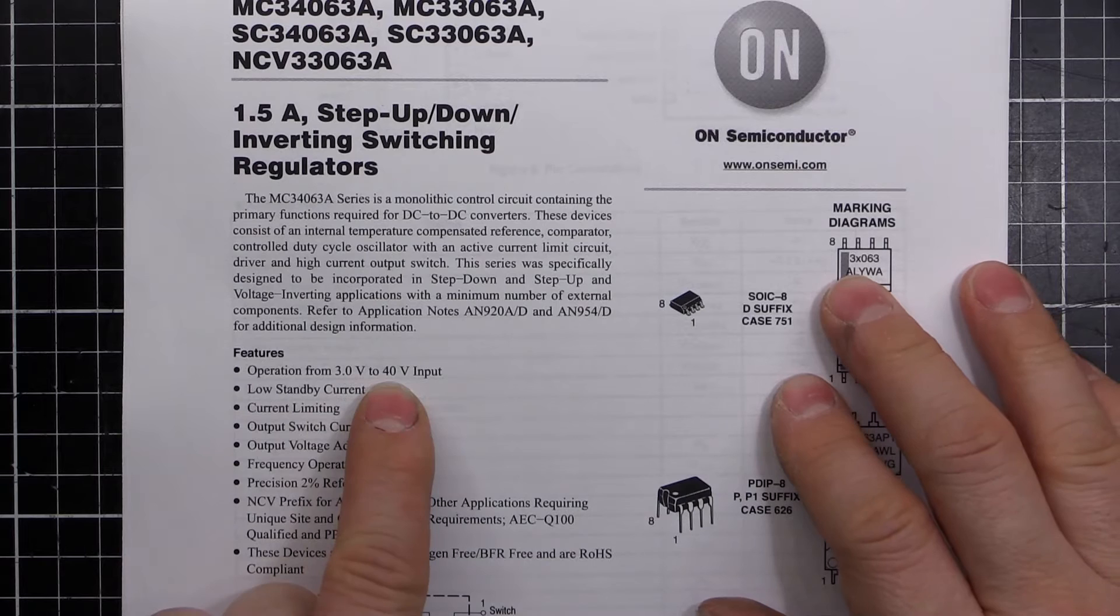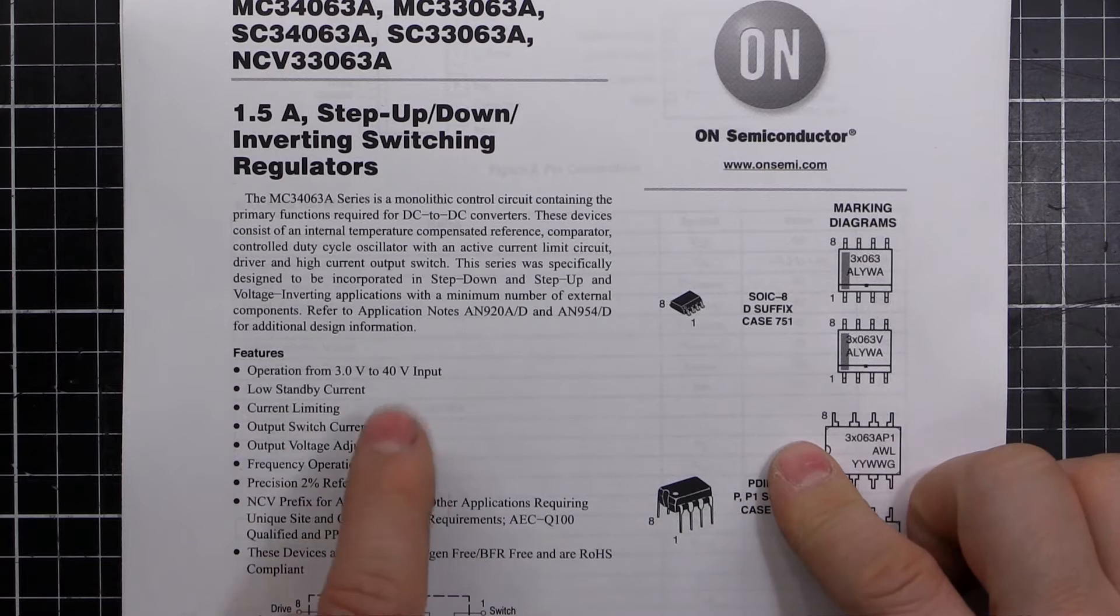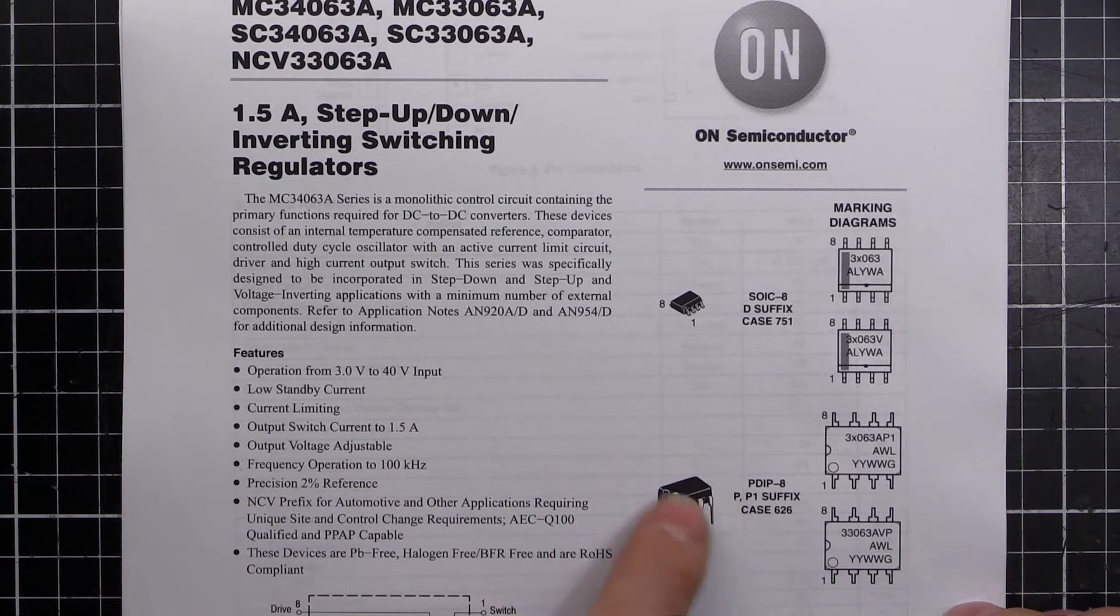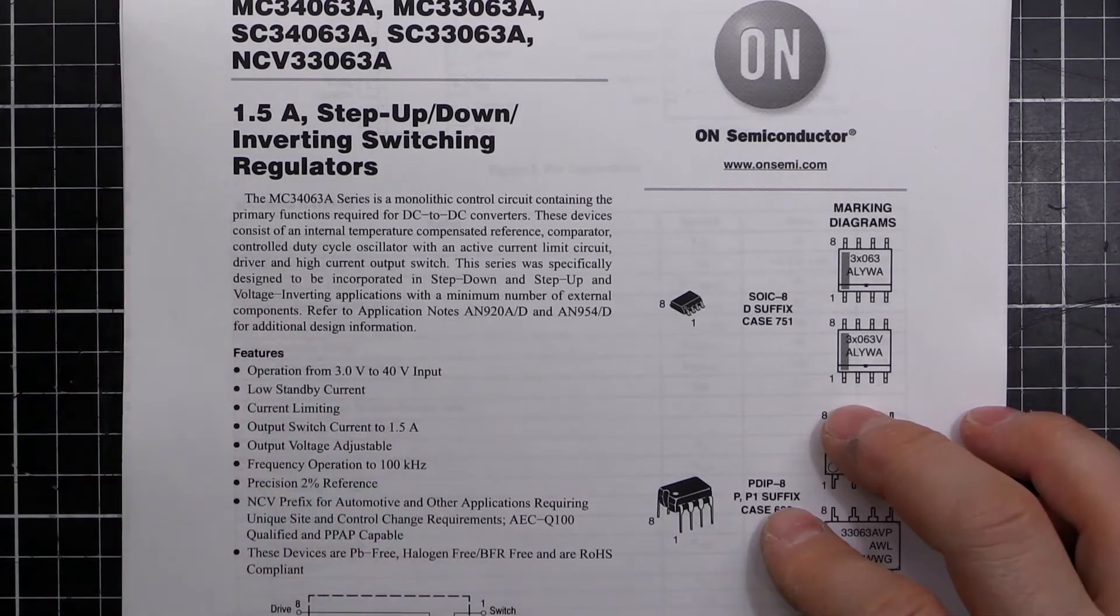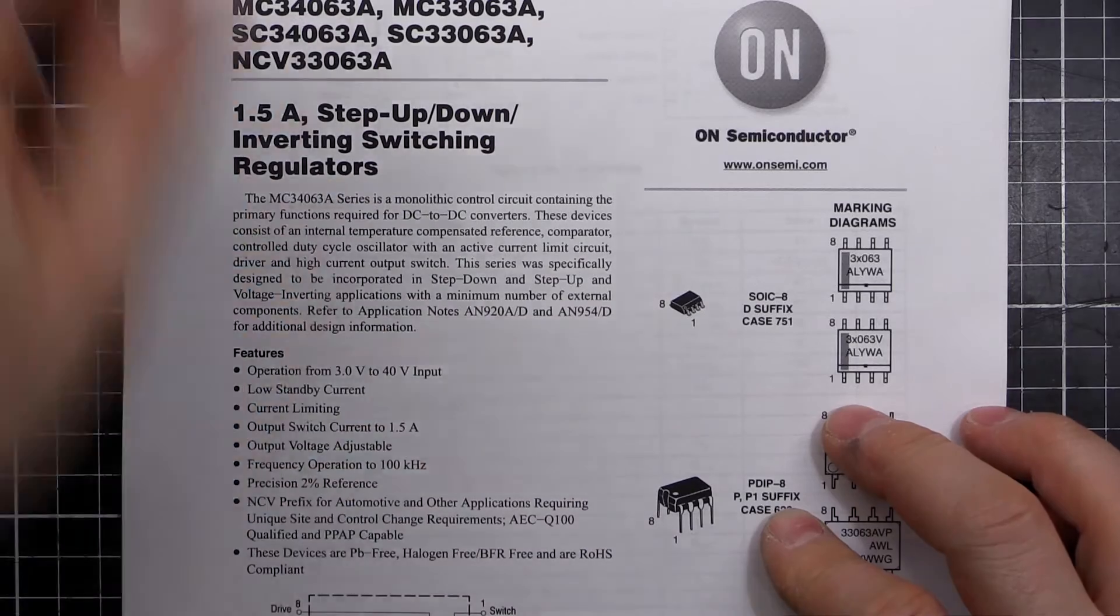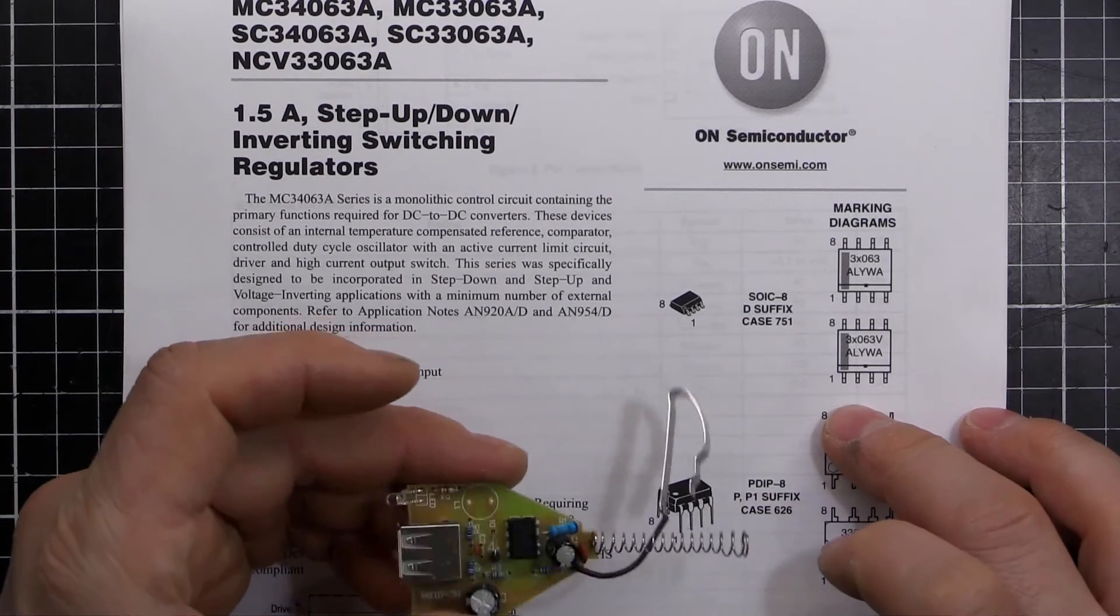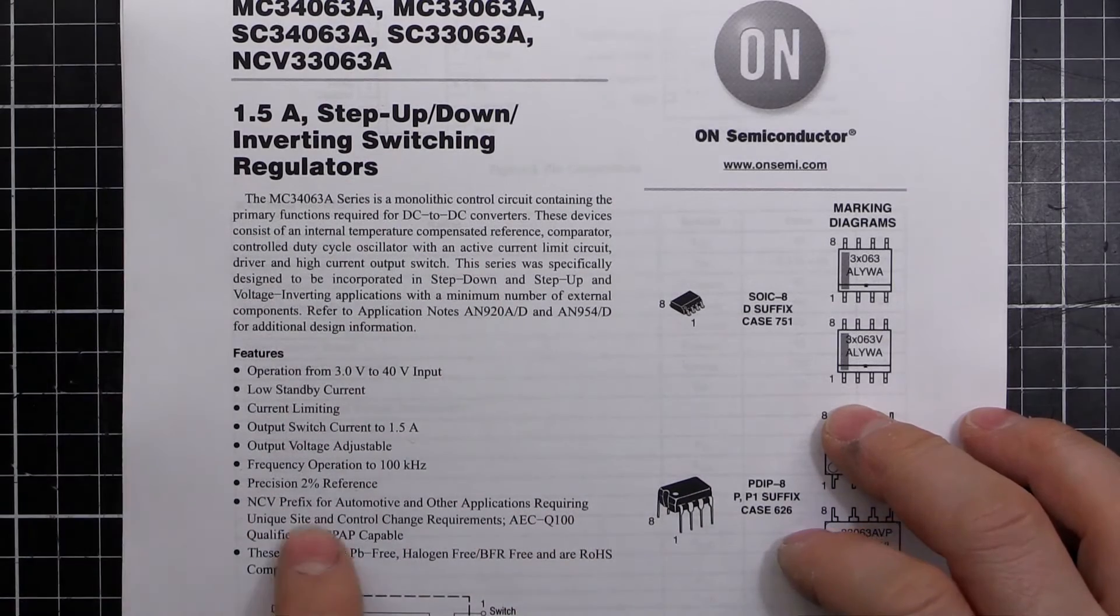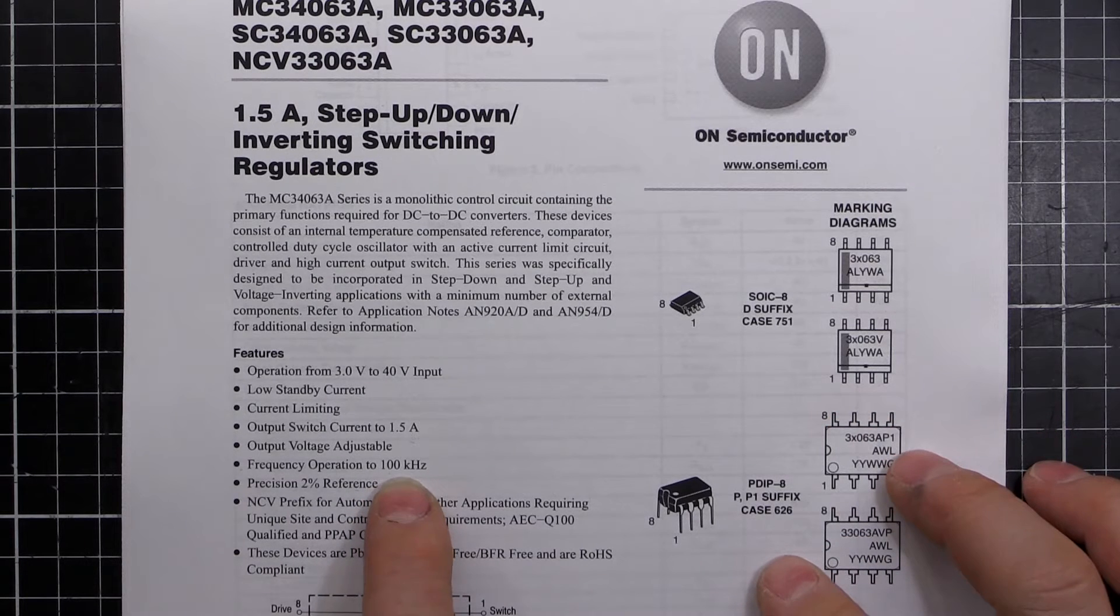Down here it says we're good for a 3 to 40 volt input, low standby current, output switch current up to 1.5 amp. If you need more you can actually put an output transistor so that your converter chip drives a transistor which then takes the bulk of the current. But we don't have that, so the maximum our circuit can put out is probably about 1.5 amps. It says 800 milliamps, so you're probably just running a bit conservative on there. It says here frequency operation 100 kilohertz, that's how fast it switches, and we've got a 2% tolerance on the output voltage.